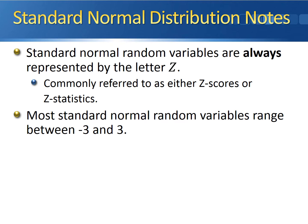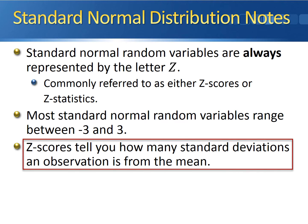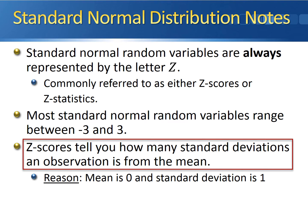Most standard normal random variables range between negative three and positive three. This makes sense because under the empirical rule, 99.6% of observations fall within three standard deviations of the mean. Most importantly, Z scores are literally a measure of how many standard deviations an observation is away from the mean — it tells you how unusual it is to have that observation. Because the mean is zero and the standard deviation is one, Z scores directly tell you how many standard deviations an observation is from its mean.